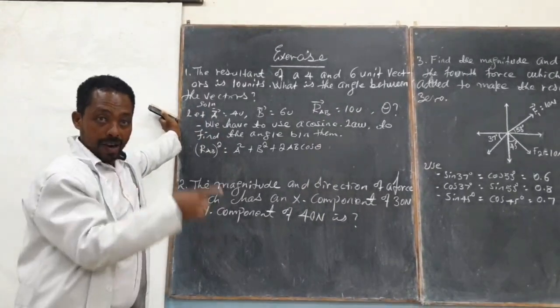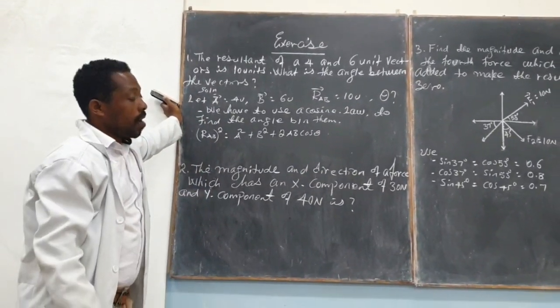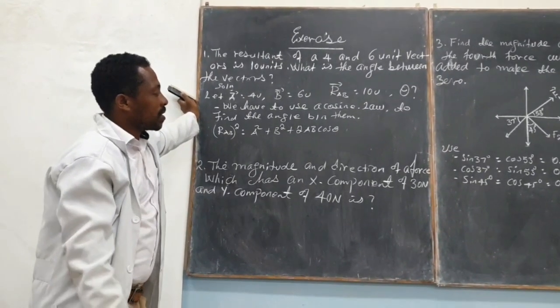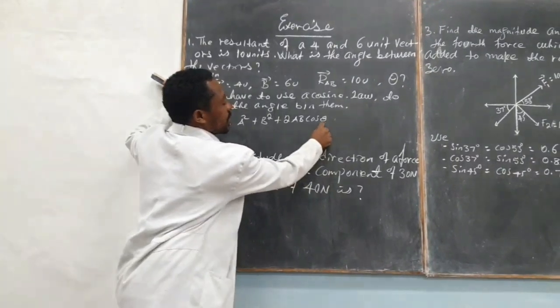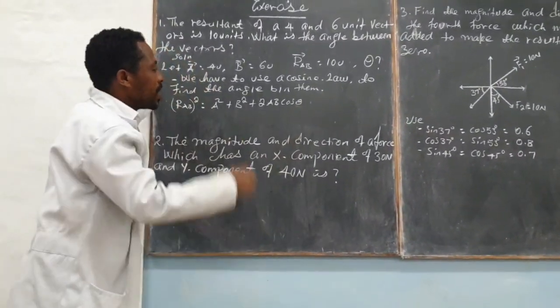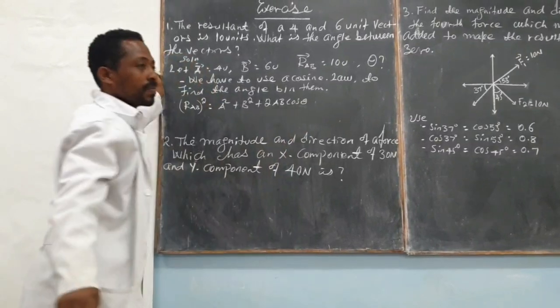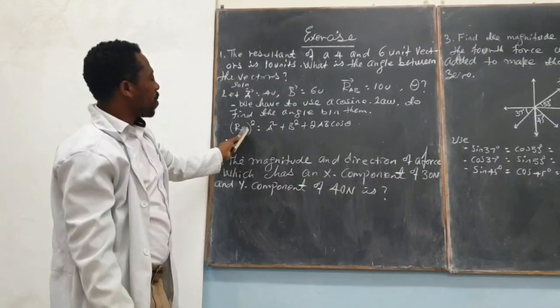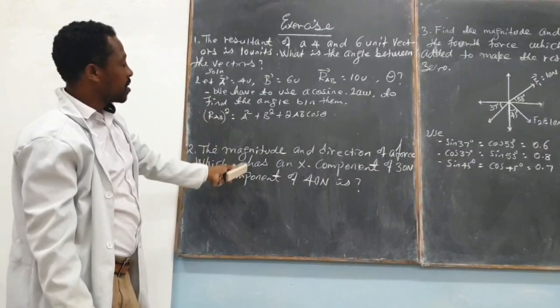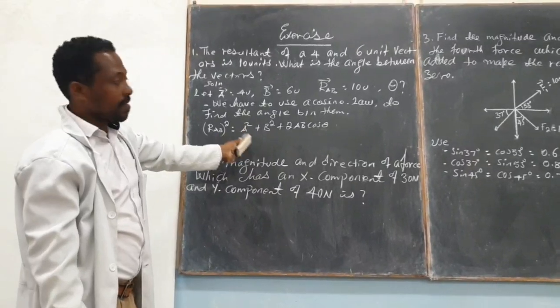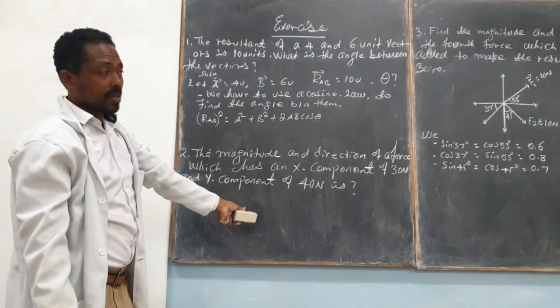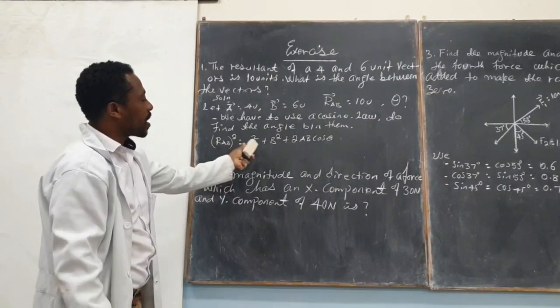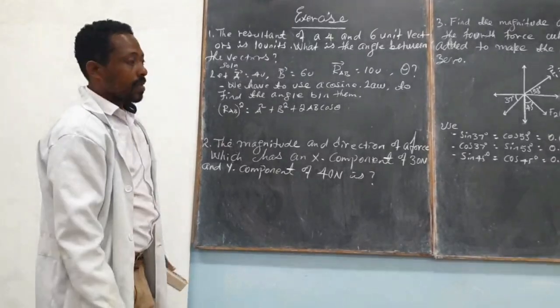We don't know the exact value of theta. Therefore, what we have to do is substitute our given inputs. The resultant vector AB is given, vector A is given, vector B is given. So the only thing is substituting these values.